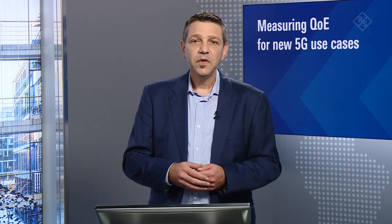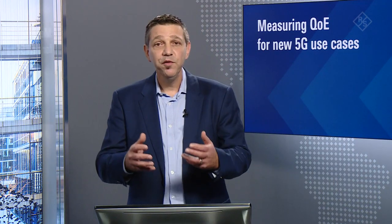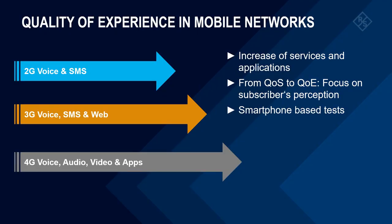Nowadays, the testing has shifted more toward a quality of experience approach, meaning a focus on the subscriber's perception — how do mobile phone users experience the mobile services and quality of service on their end device. In consequence, the tools have also changed. So instead of using spectrum analyzers, scanners and so on — which are still important — the main device today is the smartphone. Tests are executed and run on smartphones, and the aim is to give an operator a true view on the user's perception.